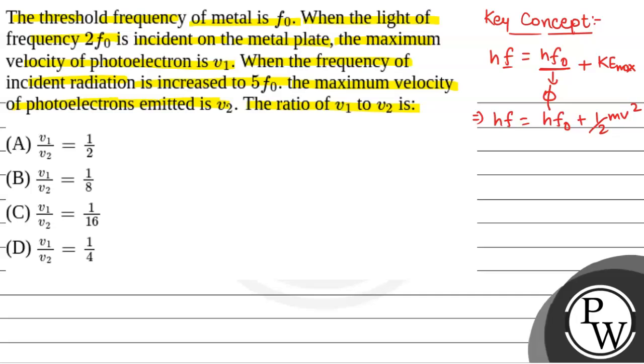Now, we have been given the threshold frequency of metal is f0, and when the light of frequency 2f0 is incident on metal plate, that is when f is equal to 2f0. So, we have energy incident is equal to 2hf0, and the work function is hf0, and the maximum velocity of photoelectrons is v1. So, this will be the first equation.